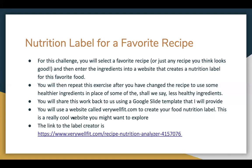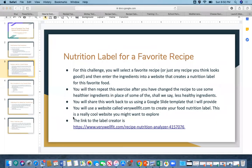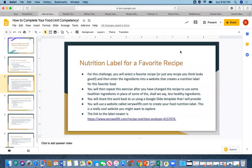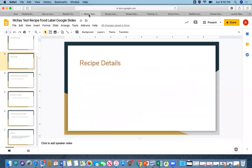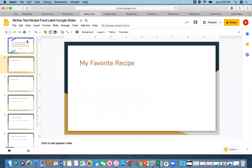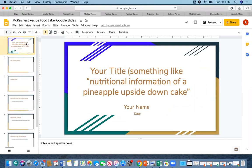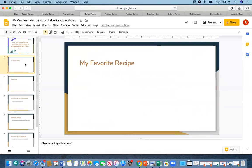Let me show you the Google Slides template right now. It's in PowerSchool, so the link is there. I want you to open this up, save a copy to your Google Drive, and then you can play with it any way you want. For the title slide, put something like 'Nutritional Information of a Pineapple Upside Down Cake' — whatever your recipe is — then put your name and date. Let me walk you through the slides.